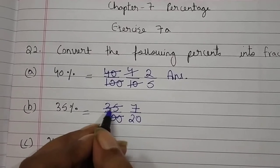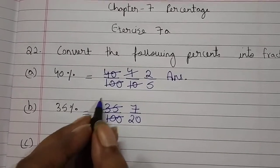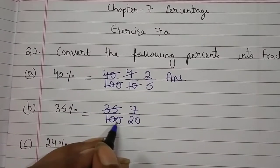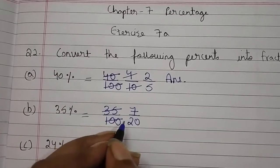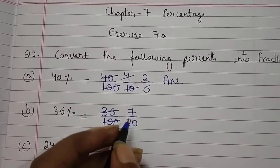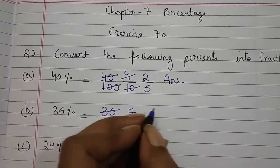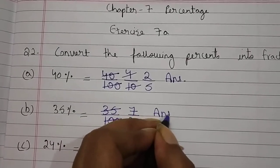35 को आप 5 से divide करोगे तो answer आएगा 7. 100 को आप 5 से divide करोगे तो answer आएगा 20. Now students, 7 upon 20 — this is your answer.